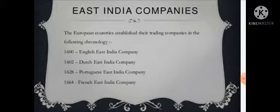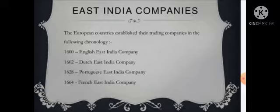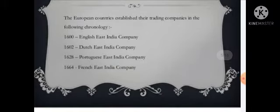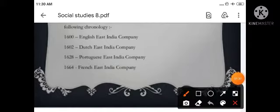There were many British companies that came to India and bought our raw materials to establish their own companies and became very successful in trade. First one is the English East India Company, 1600; Dutch East India Company, 1602; Portuguese East India Company, 1628; French East India Company, 1664. You can write all these dates and company names and revise them.